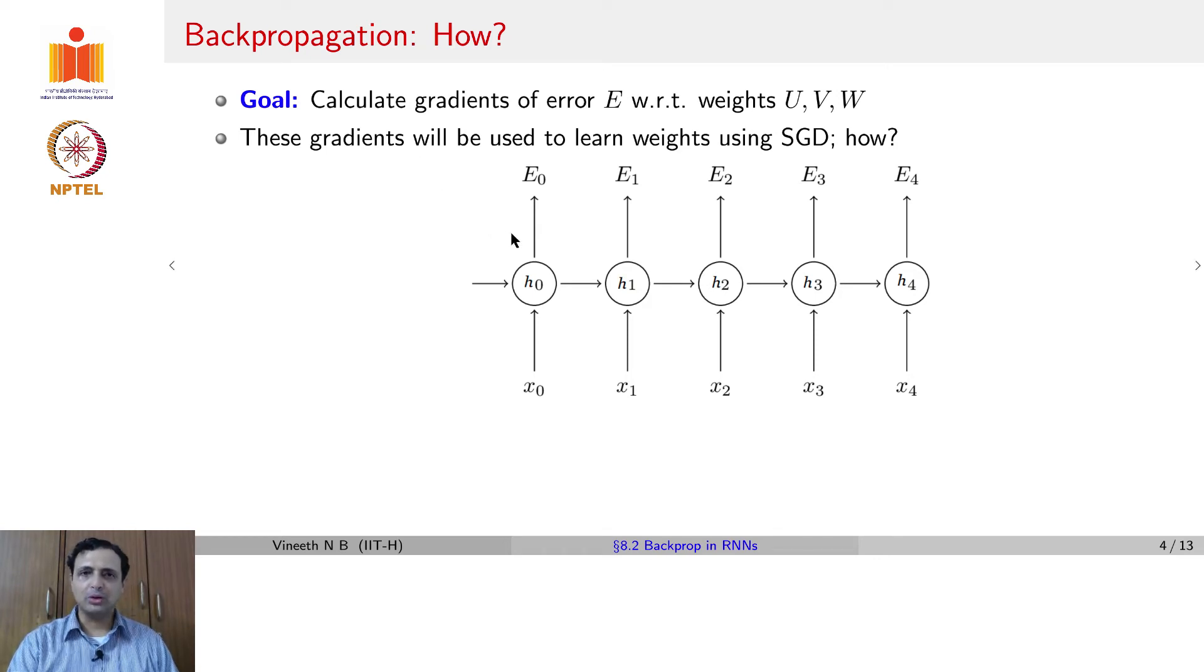exactly the same way we did this for feed forward neural networks or CNNs. And it is also important to keep in mind that depending on the kind of RNN variant that you are using, you could have an error in each time step. If you had a many to one setting, you may have an error only at one time step. But in a more general case of an RNN, you could have an error for your output at every time step. So you could have an error E0 at time step t equals 0. Similarly, E1 at time step t equals 1, and so on and so forth. In this case, till E4. The question now is, how do you compute the gradient of the error with respect to u, v and w? How do you do this?